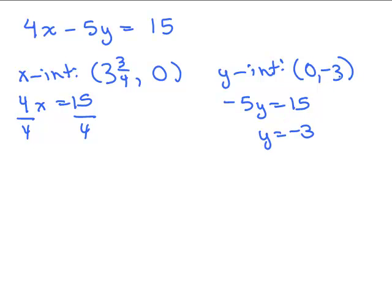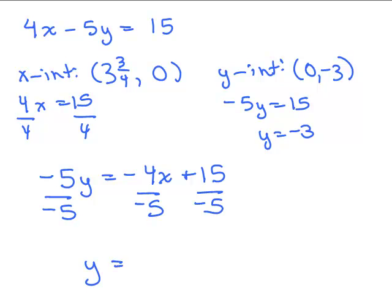So, you could go ahead and plot these, but sometimes that's hard on graph paper to get it exact. So, if you get fractions for your x or y intercept, sometimes it's easier to do the slope intercept method. So, if I take this equation and I solve for y, I have to subtract 4x from both sides and then divide by negative 5.